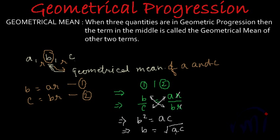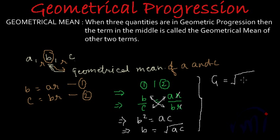From B squared equals AC, we can write B equals the square root of AC. And this B is the geometrical mean of A and C. So if you have to find the geometrical mean of any two given terms, we usually call it G, and G equals the square root of their product. This is the formula to find the geometrical mean.